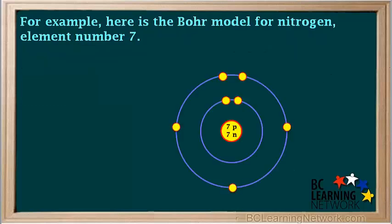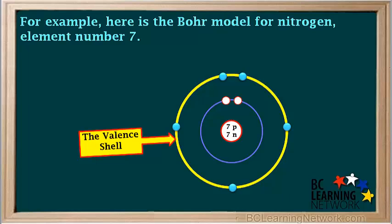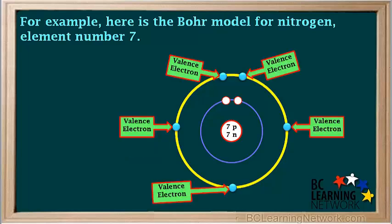For example, here's the Bohr model for nitrogen, element number seven. The outermost occupied shell, or valence shell, is shell number two, as shown by the yellow circle here. And the valence electrons — the electrons in the valence shell — are represented by the blue circles here. Notice that a neutral nitrogen atom has five valence electrons.